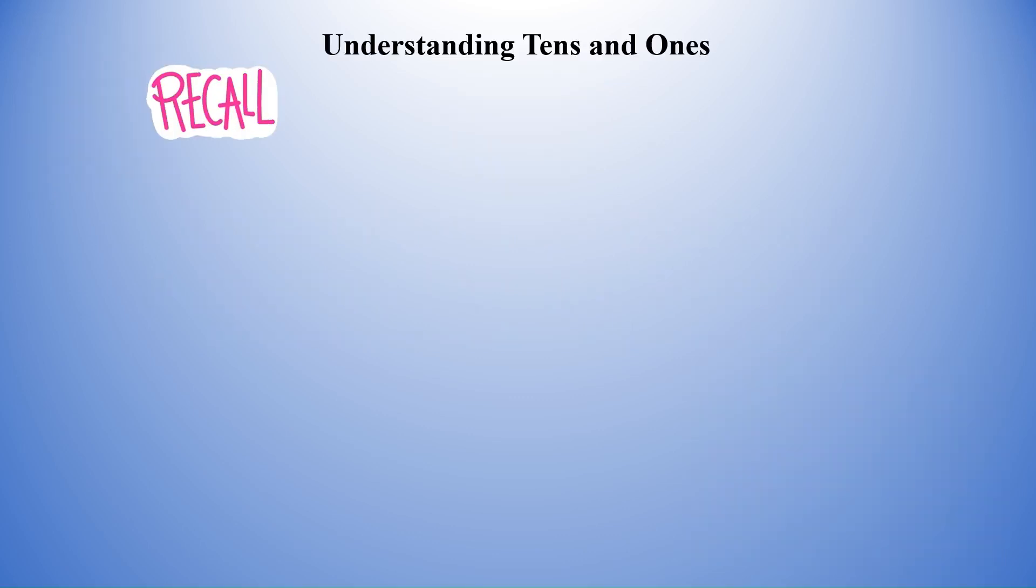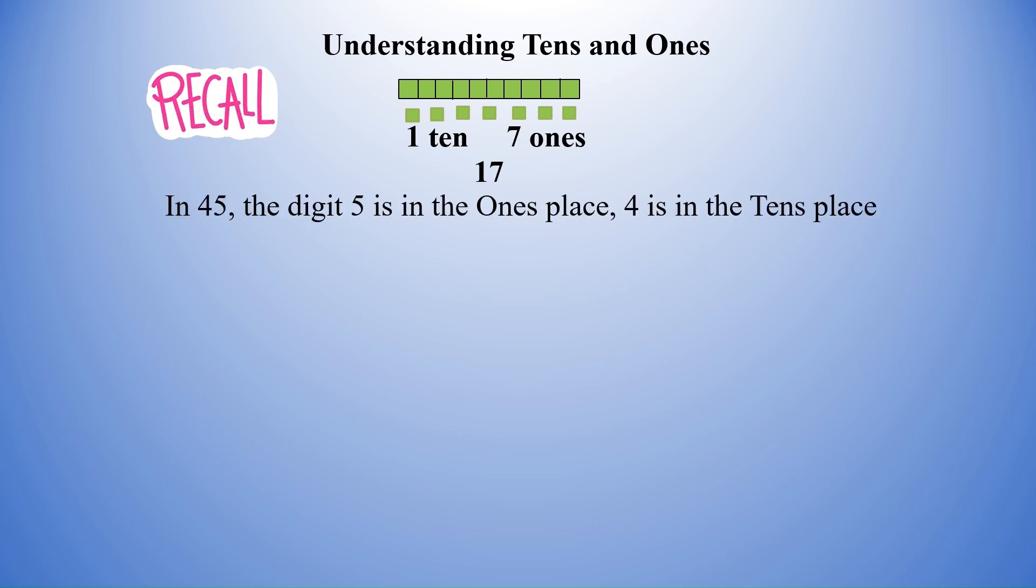Recall our CRISPR special video on tens and ones. Check for the link in the description below if you missed it. Here is an example we did before: 17. 17 can be written as 1 ten and 7 ones. We will take one more similar example, 45. In 45, the digit 5 is in the ones place and 4 is in the tens place.